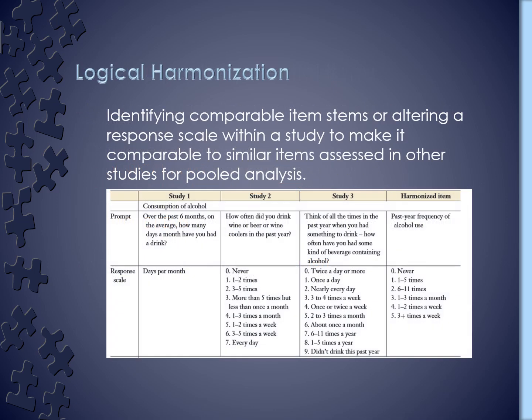So we have these three sets of items underlying any pooled data set: identical items, logically harmonized items, and unique items. Common items are the ones we hope come from the identical and logically harmonized items. You need some subset of common items to establish a commensurate or equivalent scale for the underlying construct.